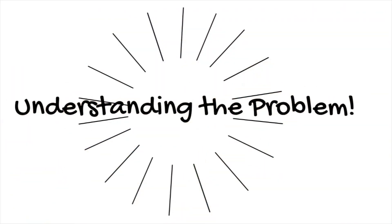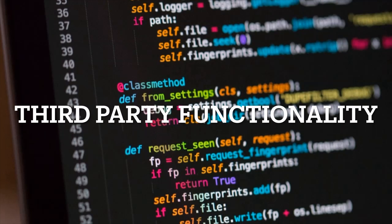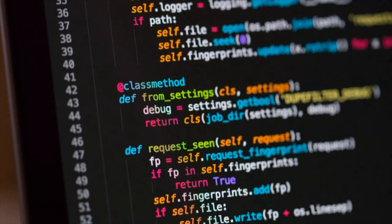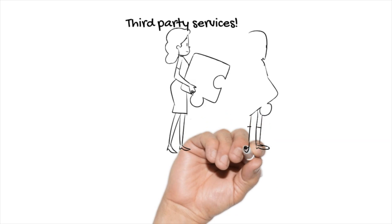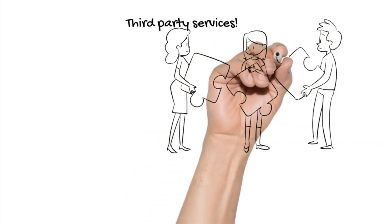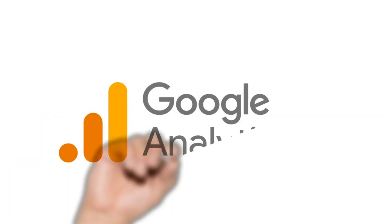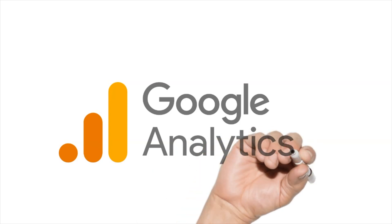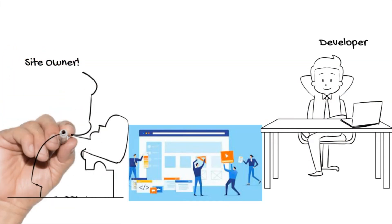Say you want to add third-party functionality on your website that isn't built into your website's main code. To do that, you approach various third parties and those third parties share a snippet of code that they need you to implement in your website. Let's take an example where you want to implement Google Analytics — you get its code and ask your developer to implement it.